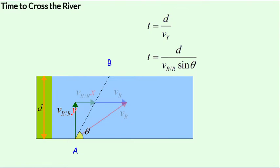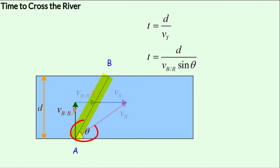The distance in the y-axis is d and the velocity in the y-axis is vb_r·sinθ. This means that if the line AB makes an angle θ with the x-axis, then the time taken to cross the river of width d is d divided by vb_r·sinθ, where vb_r is the magnitude of the velocity of the boat with respect to the river — the velocity with which we head out from A to B.